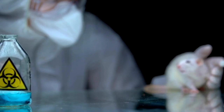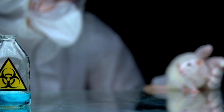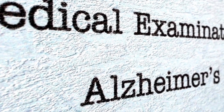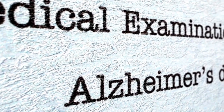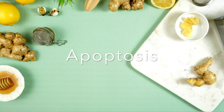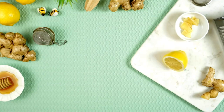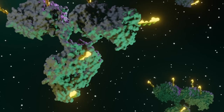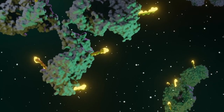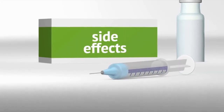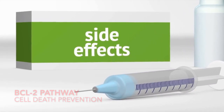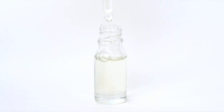So how do these senolytic drugs work? Senescent cells resist normal programmed cell death, which is called apoptosis. Senolytics force these cells to self-destruct by blocking survival pathways. One of the molecular pathways is BCL-2, which prevents cell death.